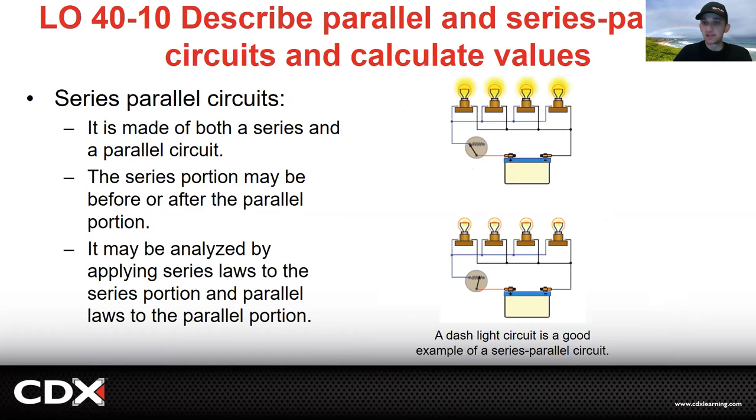Series parallel circuits: you'll see those in cars a lot too. A lot of times you'll see them in an instrument panel cluster with dash lights. This is kind of what it would look like in dash lights in the car. It's made of both a series and parallel circuit combined. The series portion may be before or after the parallel portion. It may be analyzed by applying series laws to the series portion and parallel laws to the parallel portion. So you can see here you kind of have a series circuit, but you also have a parallel circuit because there's different branches that go to here and back down.